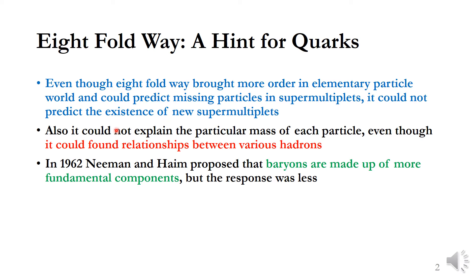Also, the 8-fold way could not explain the particular mass of each particle, even though it could find relationships between various hadrons. We wrote the Gell-Mann–Okubo equations among the baryons and like that. We found the relationship between various hadrons, but we could not explain why those particular masses.